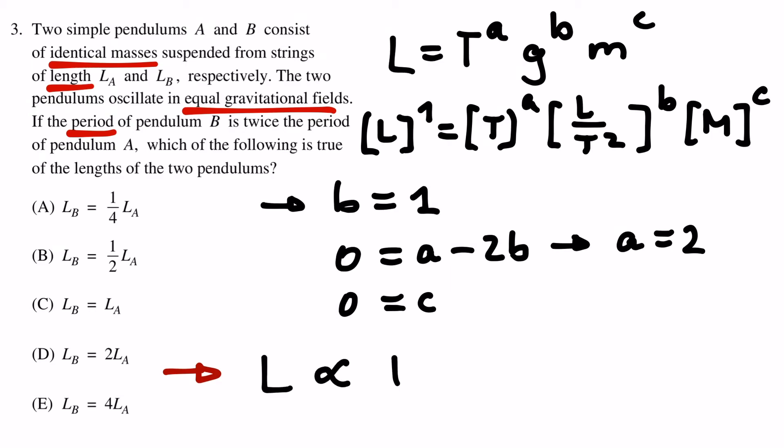There we have it. If a pendulum's period is twice as long, then its length has to be 4 times as long. So answer e is the correct one.